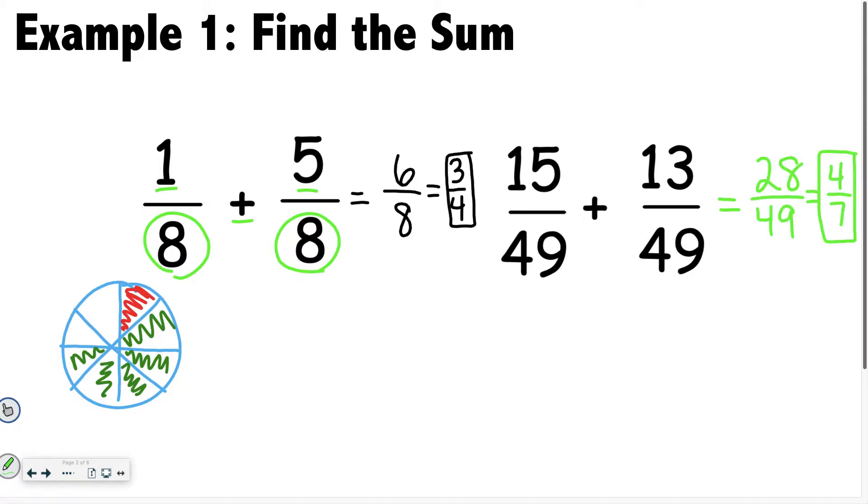Hopefully you ended up all the way at 4 over 7, but if not, hopefully you got to at least 28 over 49, because that tells me that you are adding correctly, you just haven't quite mastered the simplifying yet.